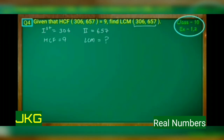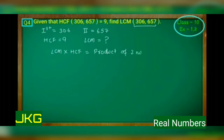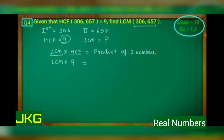You will use the formula: LCM multiplied by HCF equals the product of the two given numbers. You are clear with the two numbers given here — 306 and 657. Now LCM you have to find out, so you will write it as LCM or X. HCF is 9, equals the product of the two numbers, that is 306 multiplied by 657.